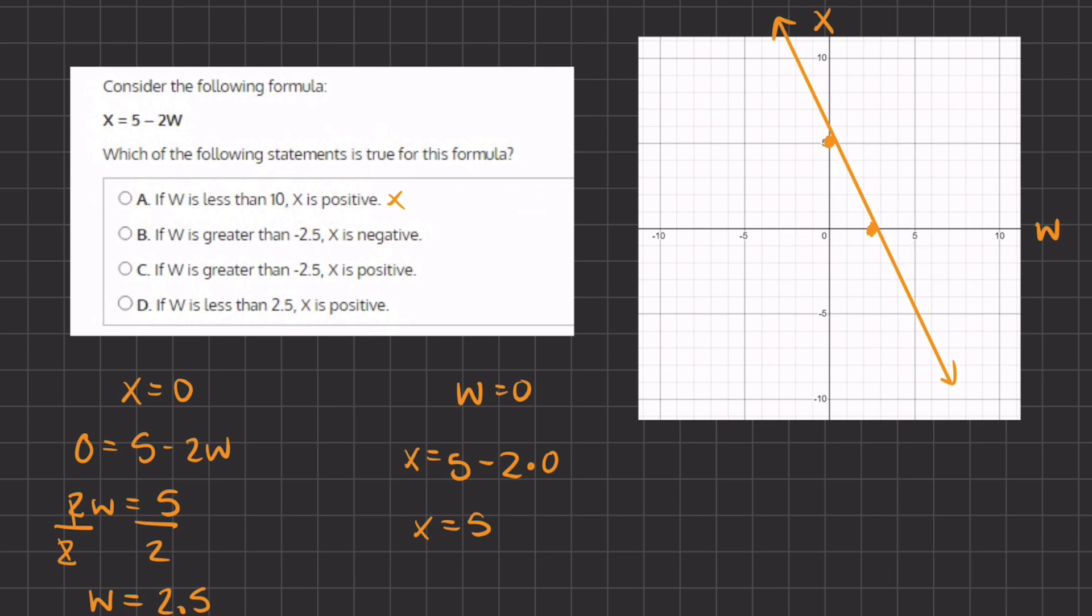And now let's move on to C. If w is greater than negative 2.5, so right over here, greater than negative 2.5, just like we had, x is positive. Well, we see that x is positive until it reaches again 2.5 and then becomes negative. And therefore, C is also incorrect.